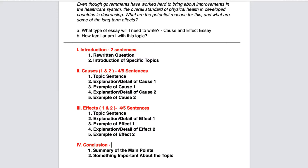Lastly, you'll need a conclusion — around three to four sentences. The first sentence should be a summary of the main points. Since we have two different paragraphs in the body, it should be about two sentences summarizing causes and effects. The last point should be one to two sentences — a standard rule is to say something important about the topic, perhaps its relevance in society or a closing statement that wraps everything up. The best way is to keep this in mind and then call upon your own knowledge to build your outline.